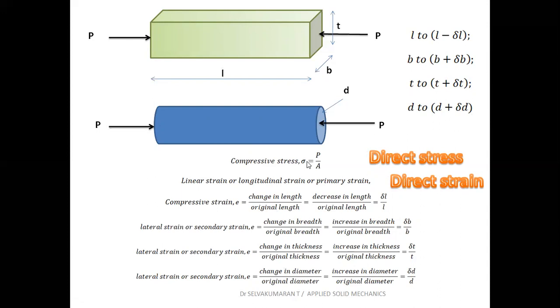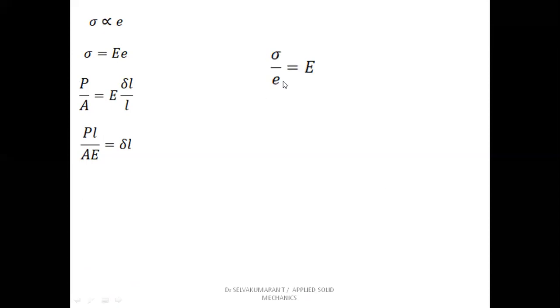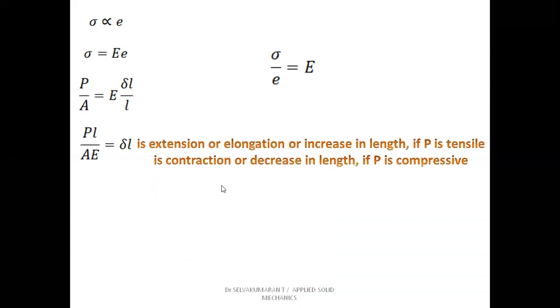Compressive stress is also called direct stress or direct compressive stress. Similarly, strain is also called direct strain or direct compressive strain. We know that stress is directly proportional to strain. Removing the proportionality, we introduce a constant of proportionality E — capital E — which is Young's modulus. Stress equals load by area; strain e equals change in length by original length, delta L by L. Cross-multiplying gives delta L equals PL by AE. So delta L equals PL by AE. Stress divided by strain equals Young's modulus. This delta L is the extension or elongation, or increase in length, if P is tensile. If P is compressive, it is called contraction or decrease in length.